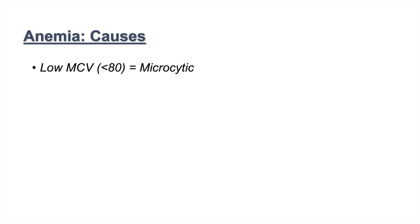The first category is when we have a low MCV, defined as less than 80. If it's less than 80, that means it's microcytic. So anemia with a low MCV is microcytic anemia. One of the largest causes is iron deficiency, which is one of the most common causes of anemia itself, and it leads to a very low MCV.